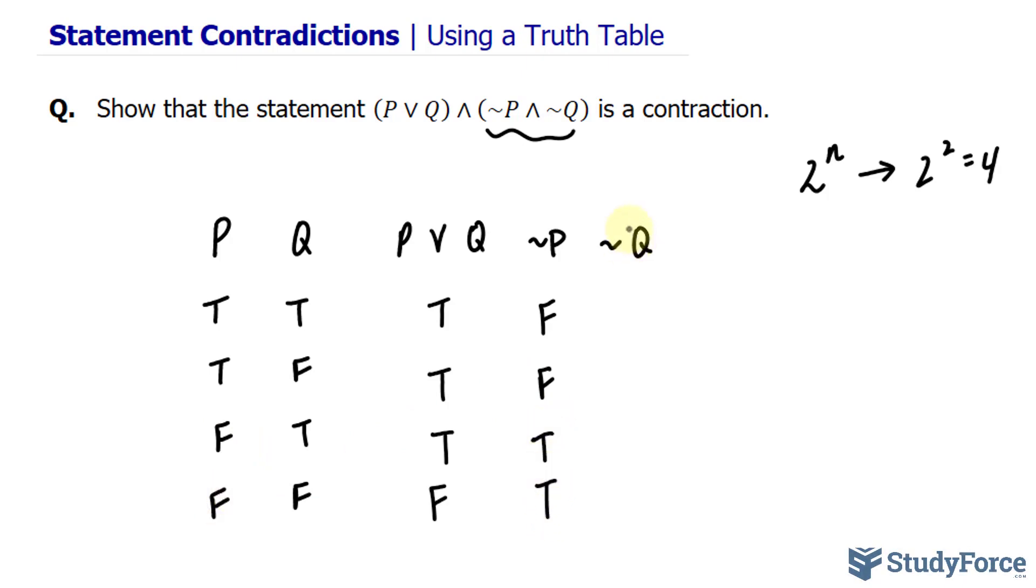And the same applies with not q. So look at this column. Where you see true, you write down false, true, false, true. Notice that we took the opposite of this column.